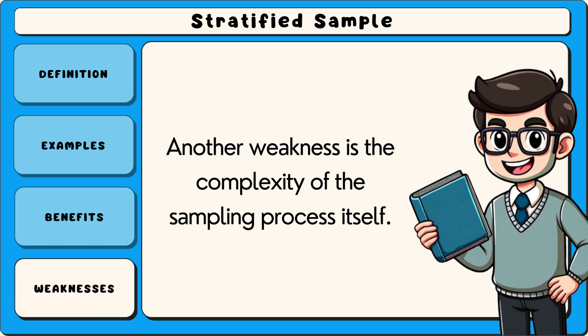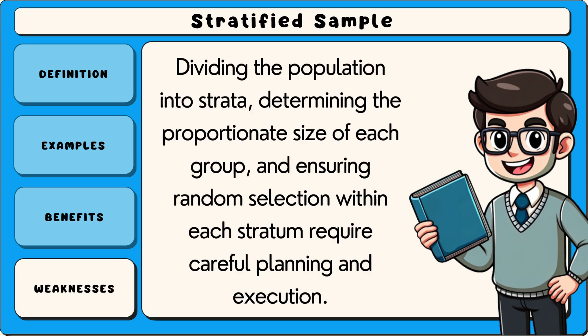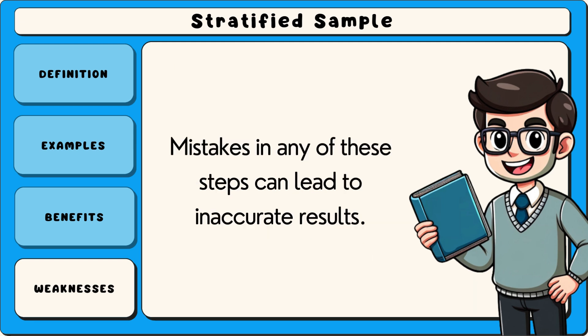Another weakness is the complexity of the sampling process itself. Dividing the population into strata, determining the proportionate size of each group, and ensuring random selection within each stratum require careful planning and execution. Mistakes in any of these steps can lead to inaccurate results.